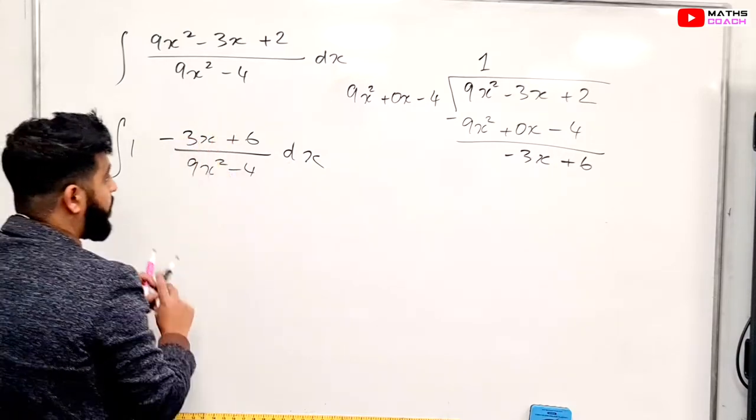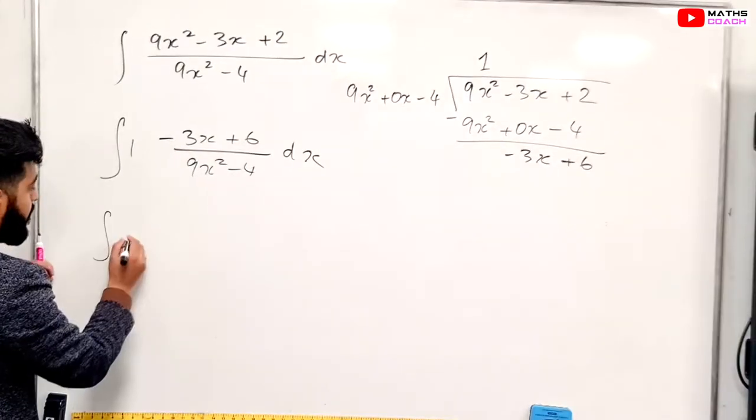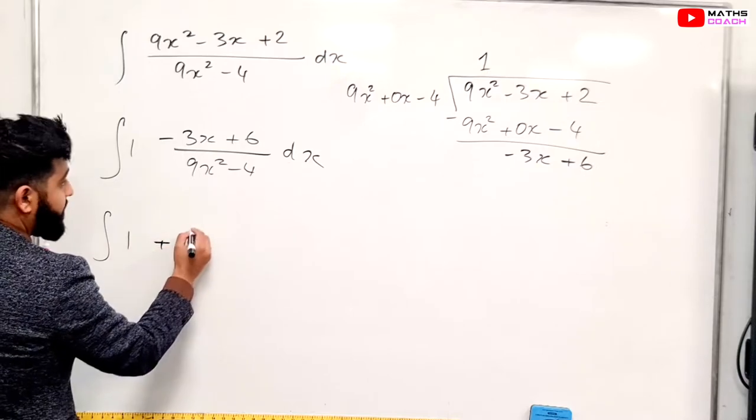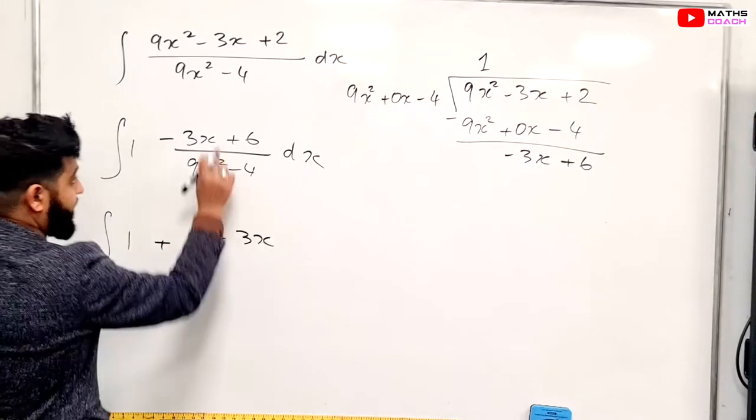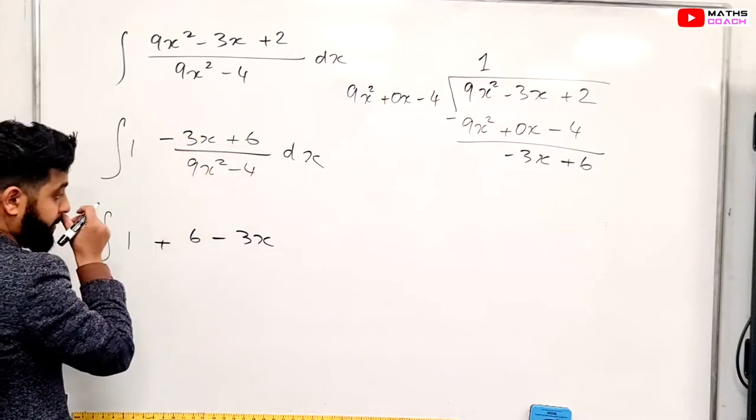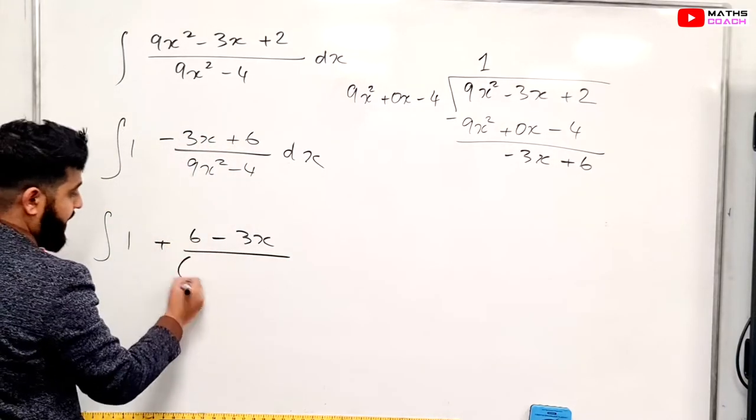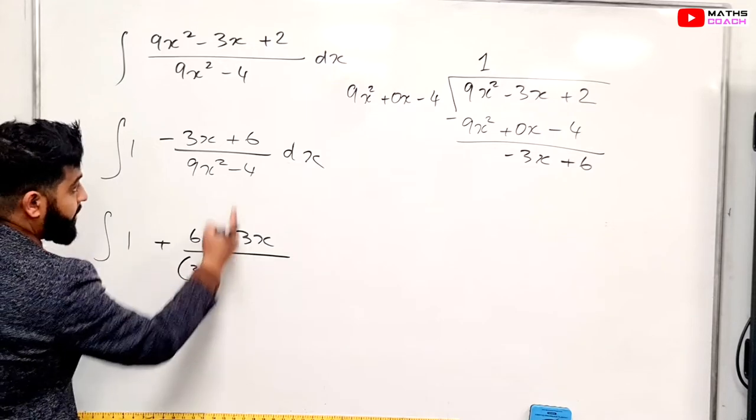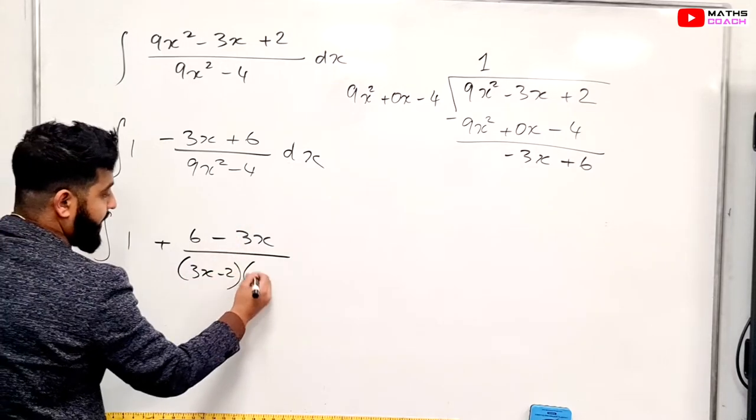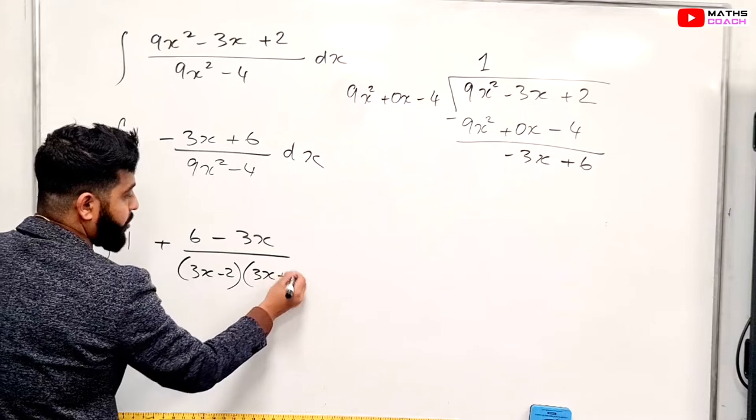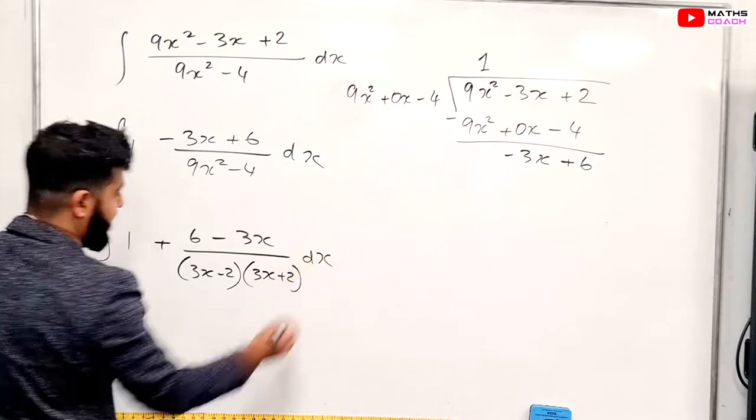So it's going to look like this, plus 6 minus 3x, so I've just dealt with that, just swapping them around. And then on the denominator, I'm going to have 3x minus 2 in one bracket and 3x plus 2 in the other bracket. And that's what we have.